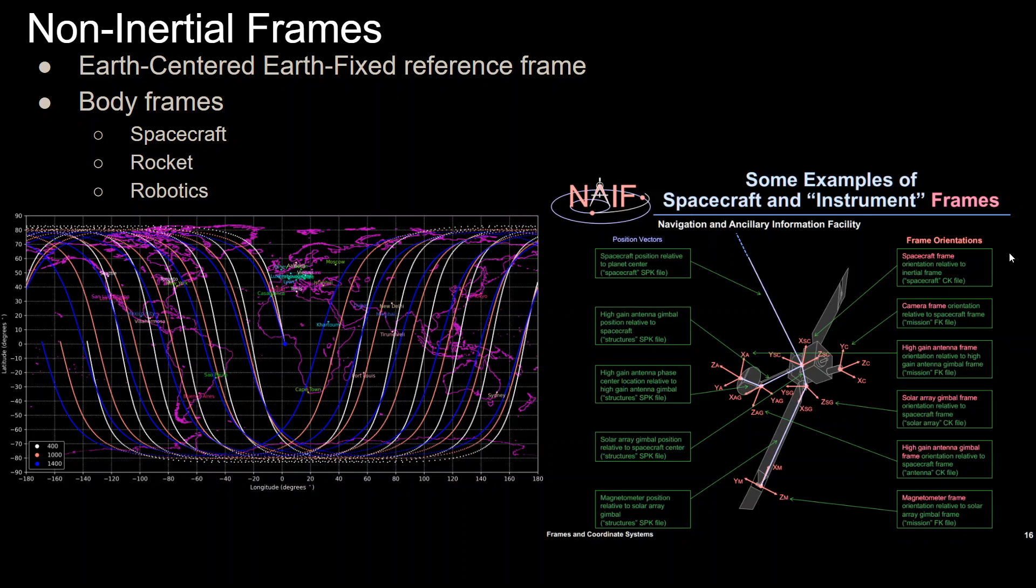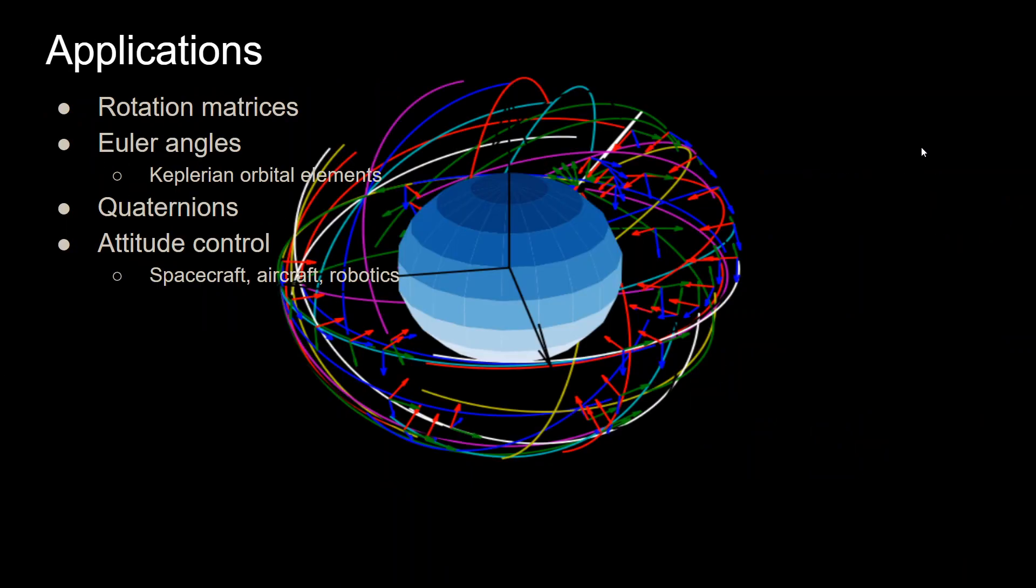Again, from the same document that I'll have a link in the description from NASA, just an example that you can have many reference frames just on one body. In this example you have a spacecraft frame that's usually centered at the center of mass of the body. But then you have a camera frame, high-gate antenna frame, you can have as many frames as you need in order to be able to do all the analysis that you need to do.